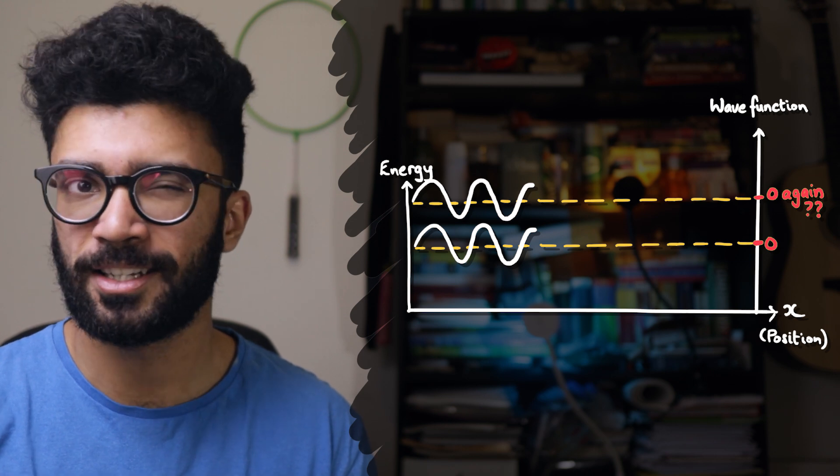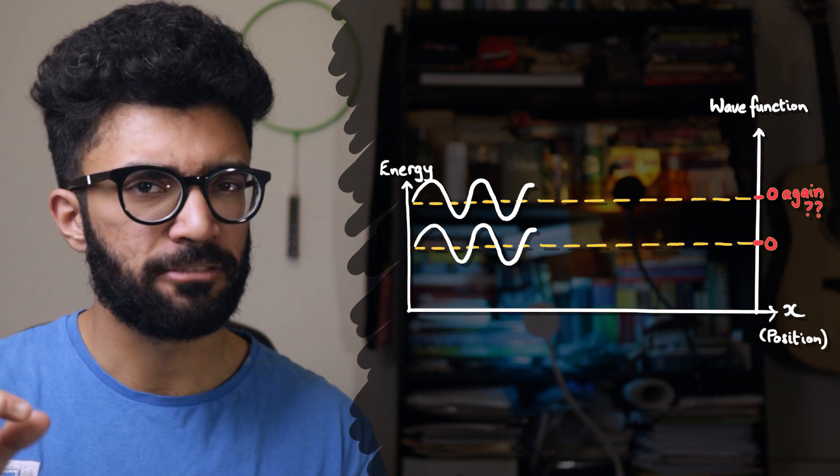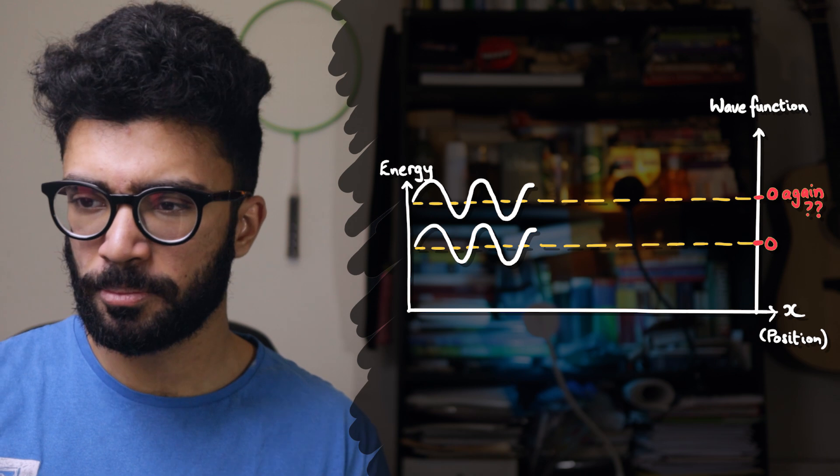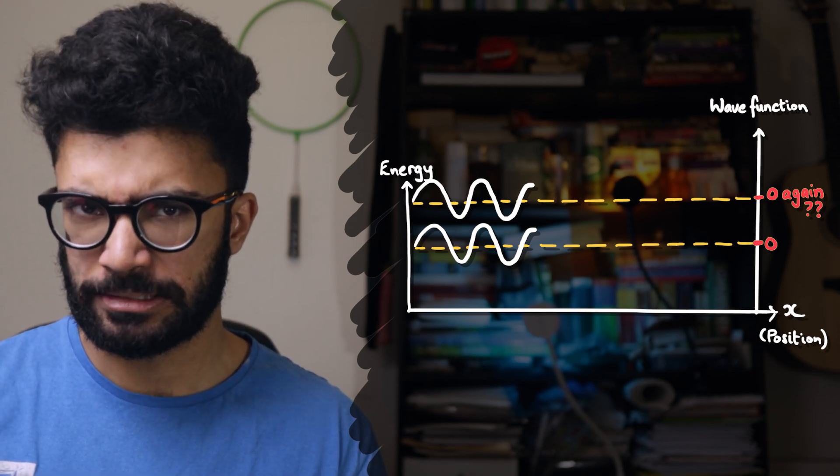But maybe the electron could have slightly higher energy, and we want to plot this on the same graph. Well, in that case, we'd have to have another zero point, and then things get really messy because you've got multiple readings on the same axis, and yeah, no.